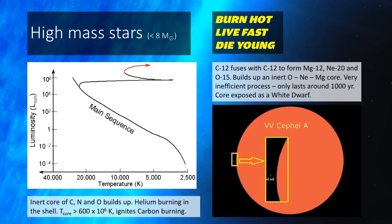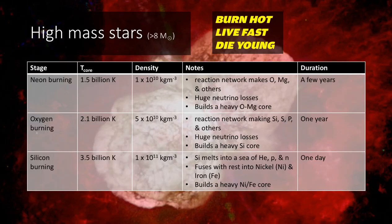If, however, you are beyond 8 solar masses, then you can go beyond in terms of what you can burn. Neon burns at a temperature of about 1.5 billion Kelvin, and makes oxygen and magnesium. This is a process that only takes a few years. Spot the theme here, it takes shorter and shorter.